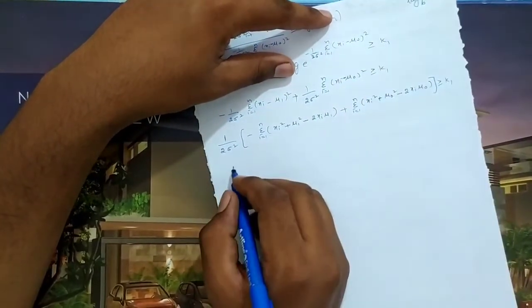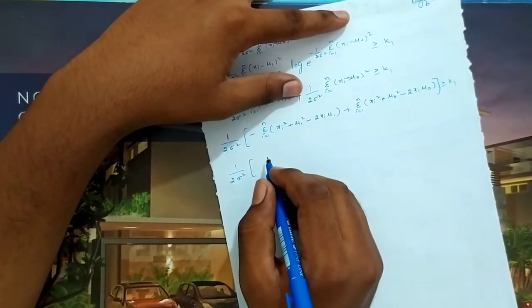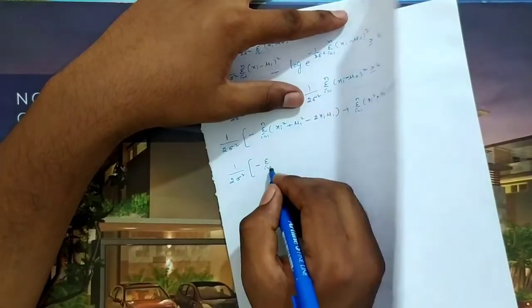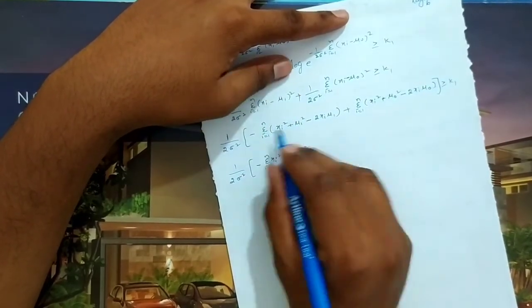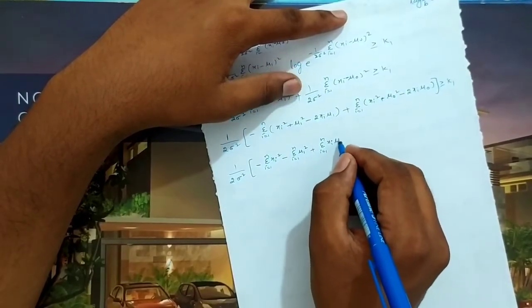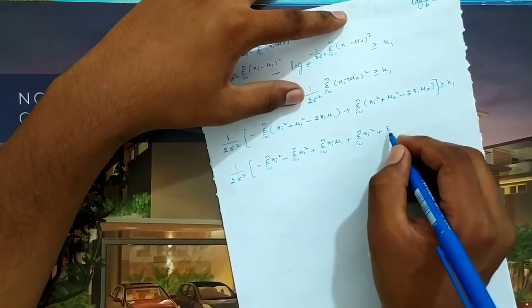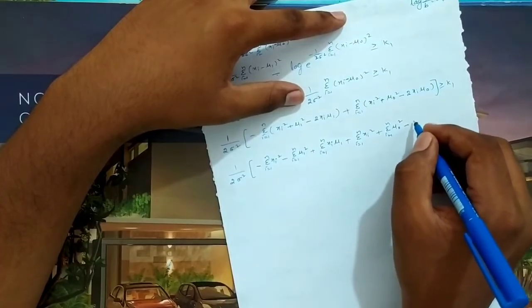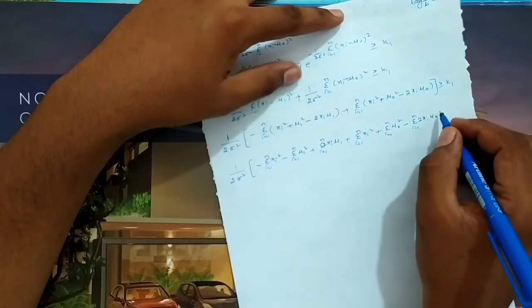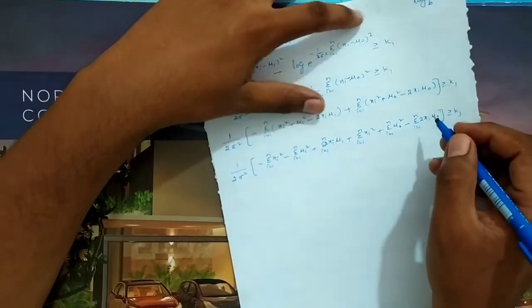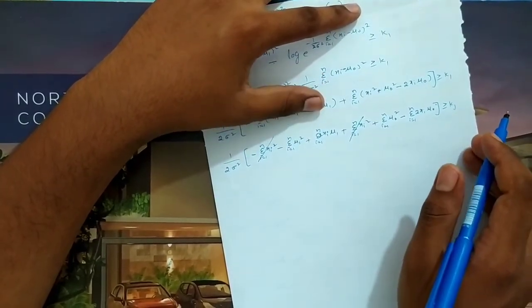Simplifying: (1/2σ²) × [Σxi² − Σμ1² + 2Σxi·μ1 − Σxi² − Σμ0² + 2Σxi·μ0]. The Σxi² terms cancel out, leaving: (1/2σ²) × [−nμ1² + 2Σxi·μ1 + nμ0² − 2Σxi·μ0] ≥ k1.